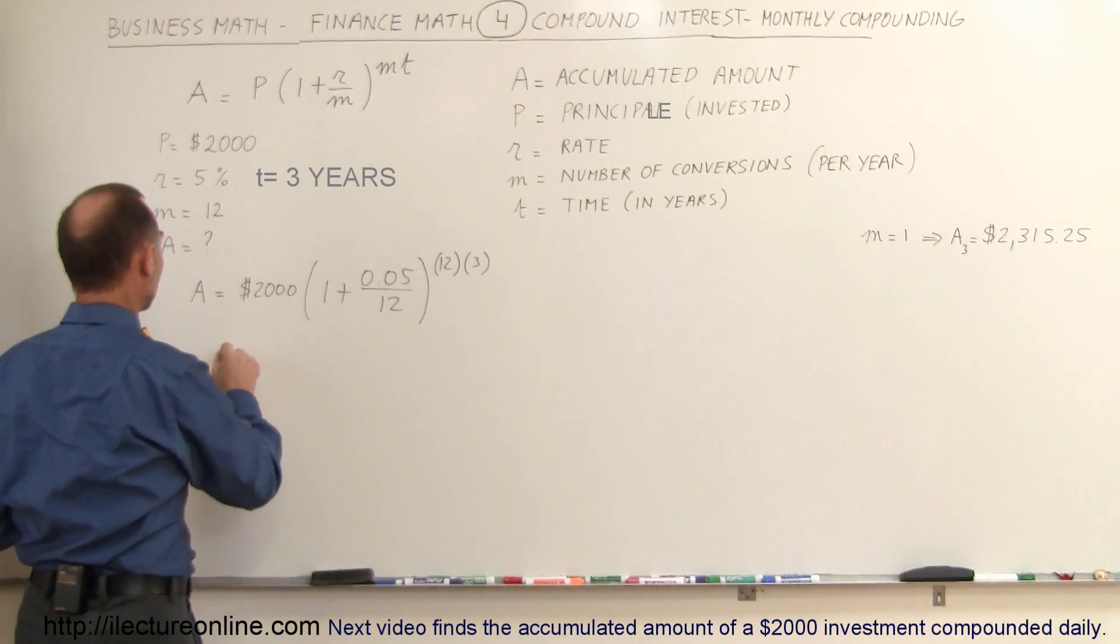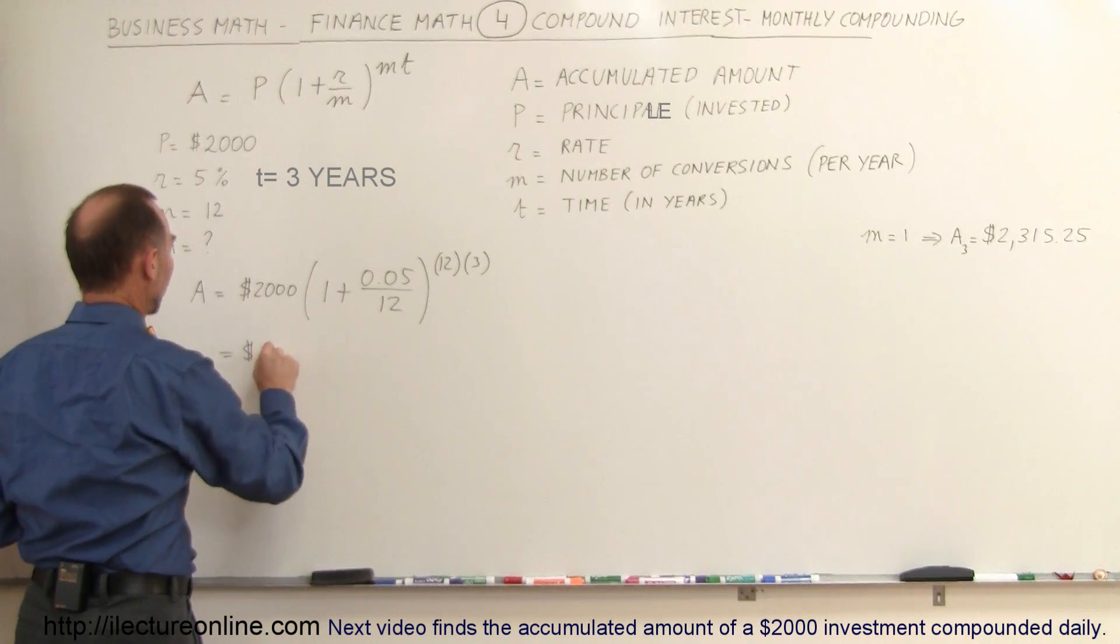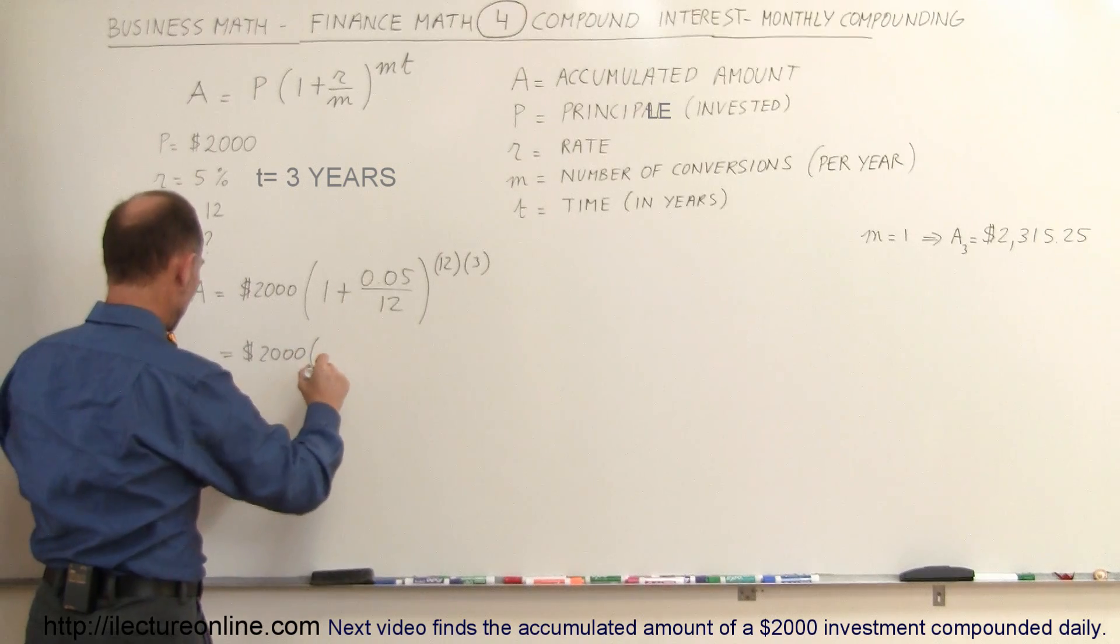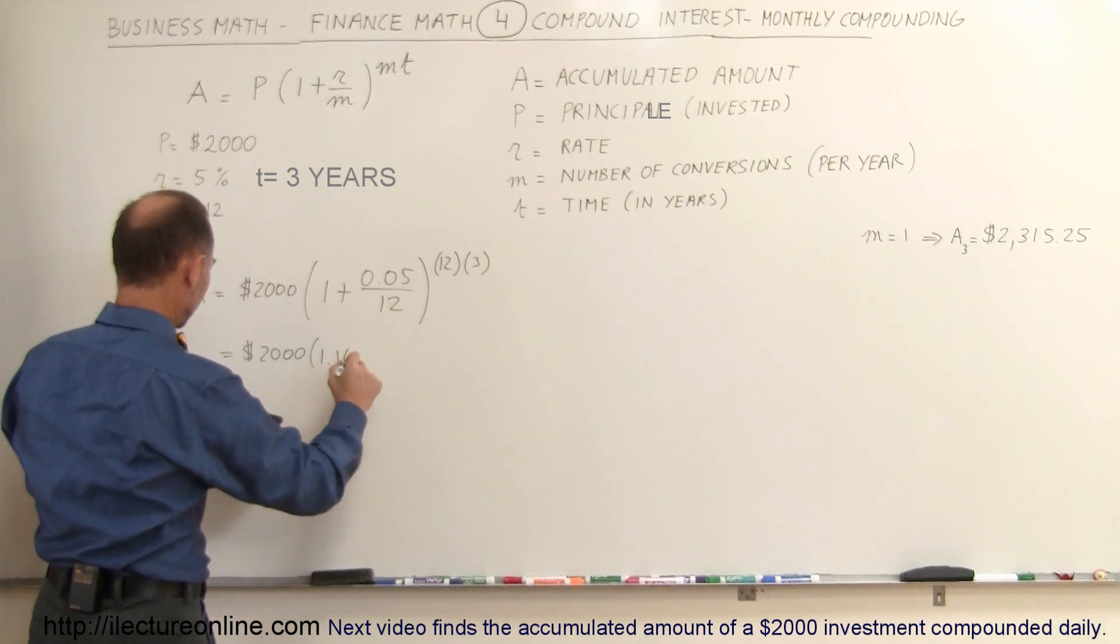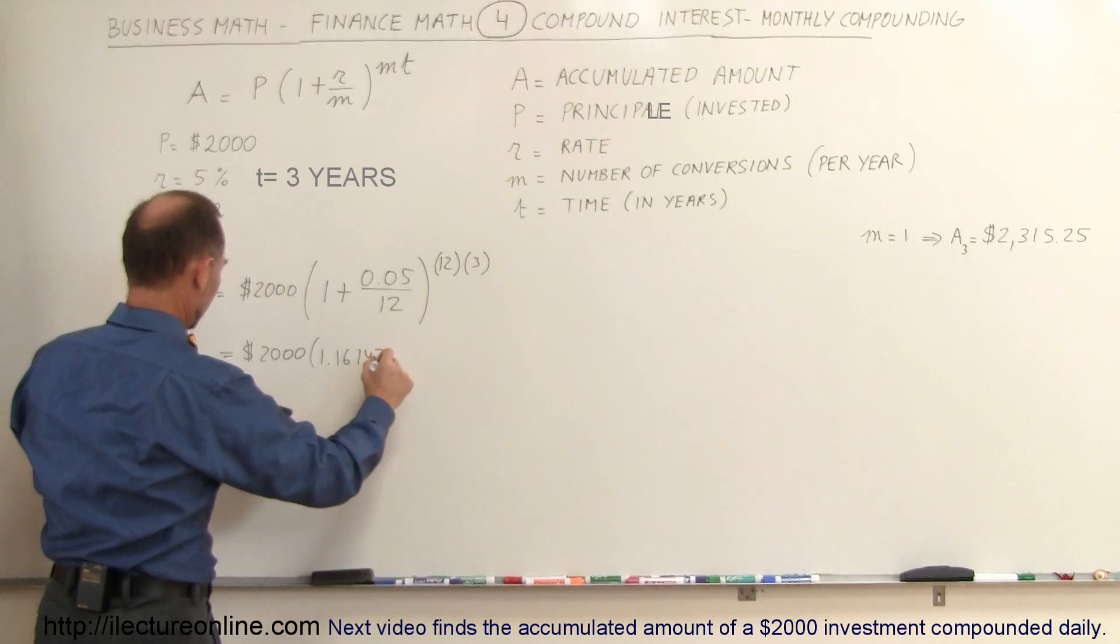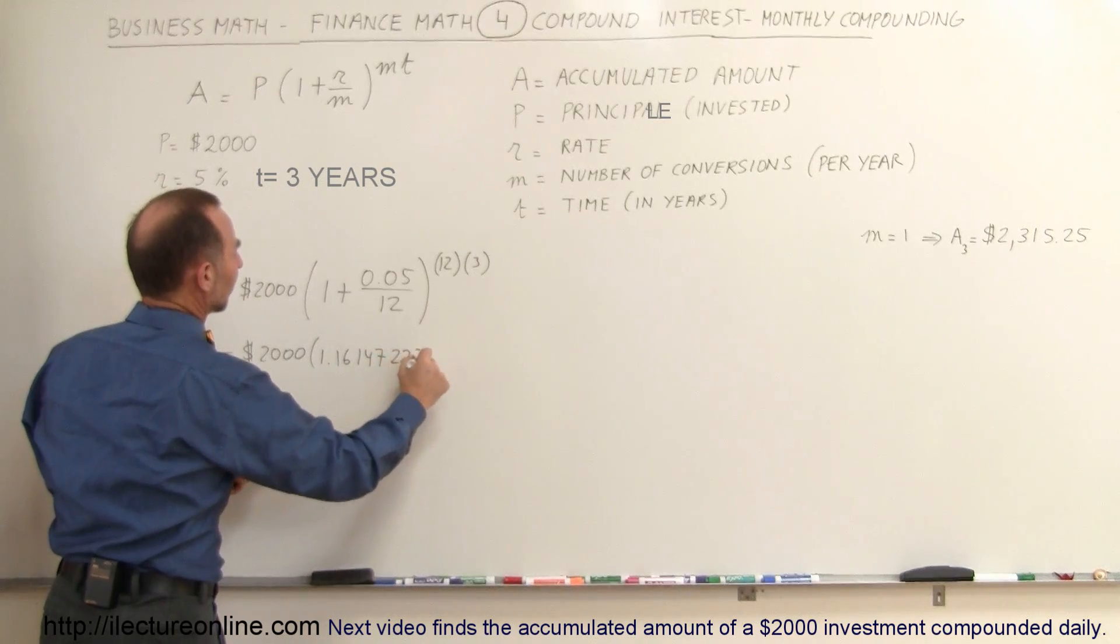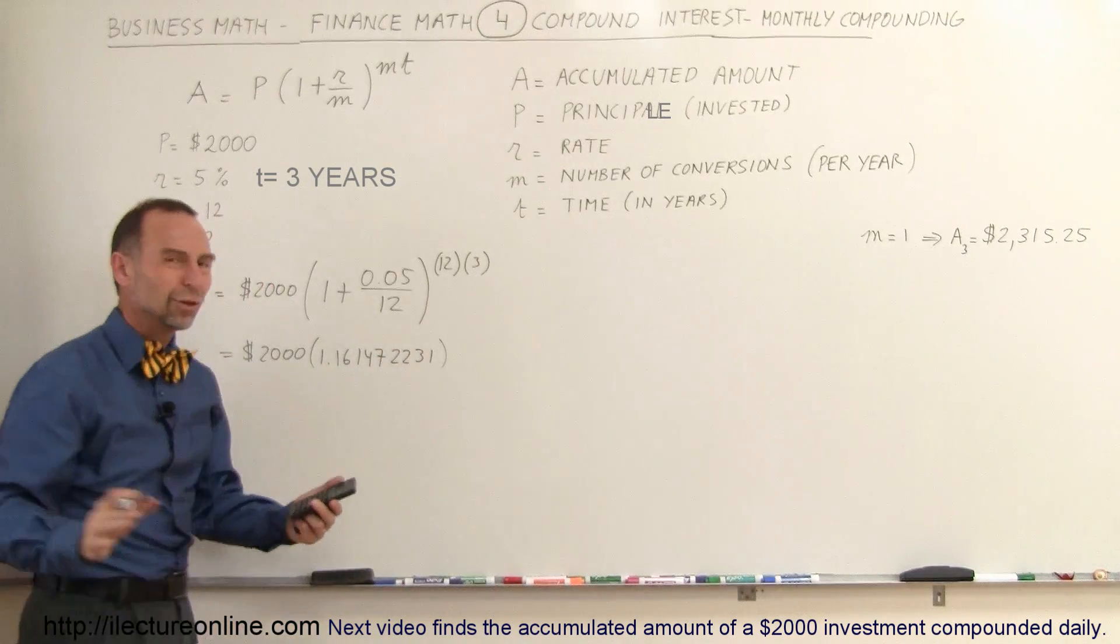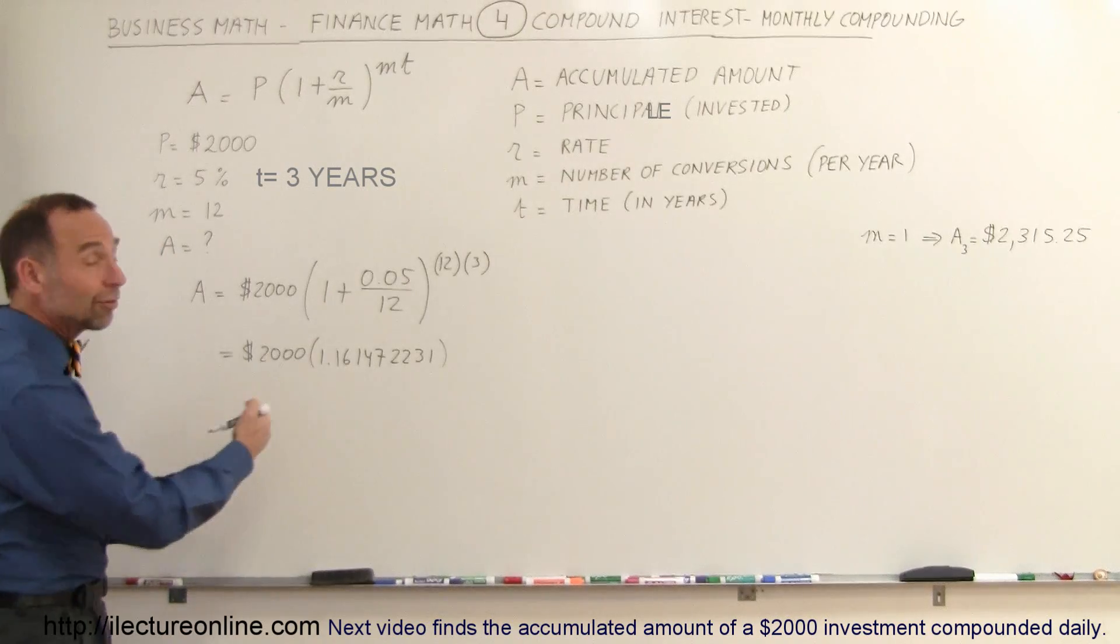And so then you end up with this is equal to 2,000 times the quantity 1.161472231. Of course, do we need all those figures? Not really, but I just want to show you that if you use your calculator, you should get something very similar to that.